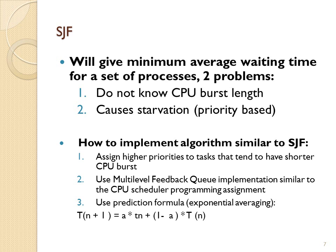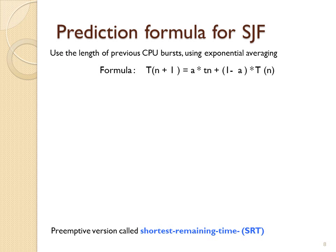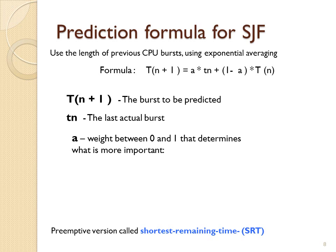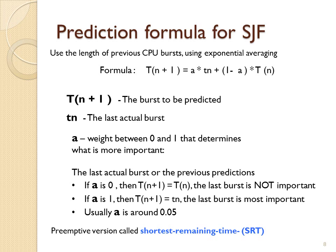The prediction formula predicts the next burst, big T of n+1, based on previous predictions, big T of n, and a weight A, plus the last burst that just happened. Little t of n is the last actual burst, A is a weight between 0 and 1. If A is 0, then big T of n+1 equals big T of n, meaning the last burst is not important at all. If A is 1, then big T of n+1 equals the last burst that just happened.